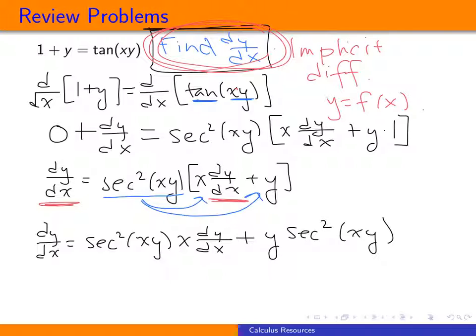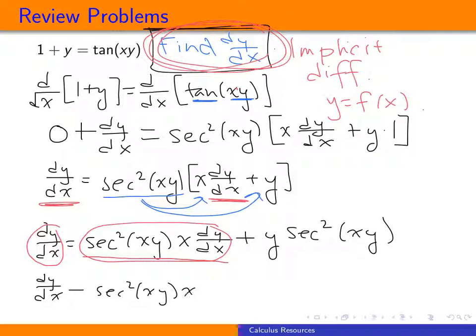Now, the next thing that we want is we want both our dy dx terms to be on the same side of their equality. So I'm going to subtract over the secant squared x y times x times dy dx. And I get dy dx minus secant squared of x y times x times dy dx is going to be equal to y times the secant squared of x y.